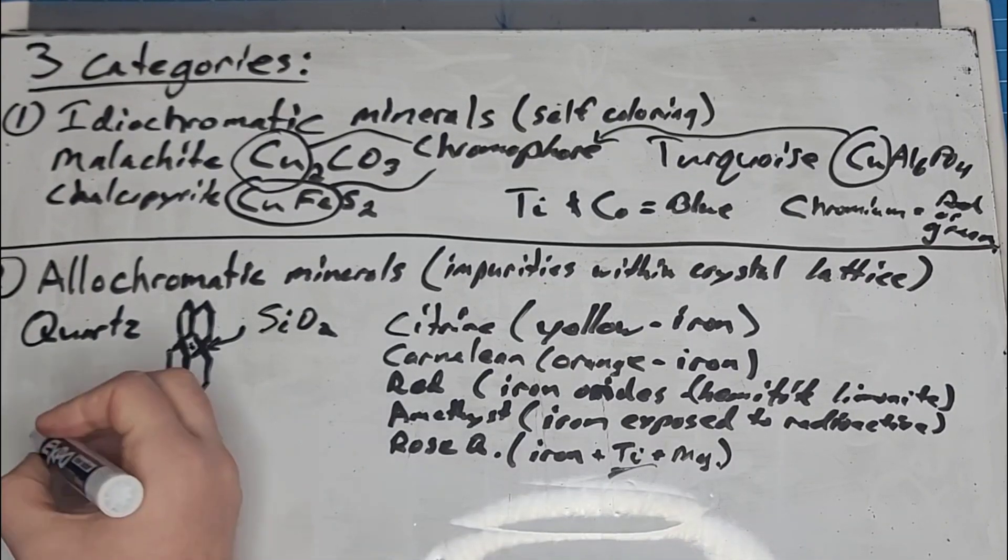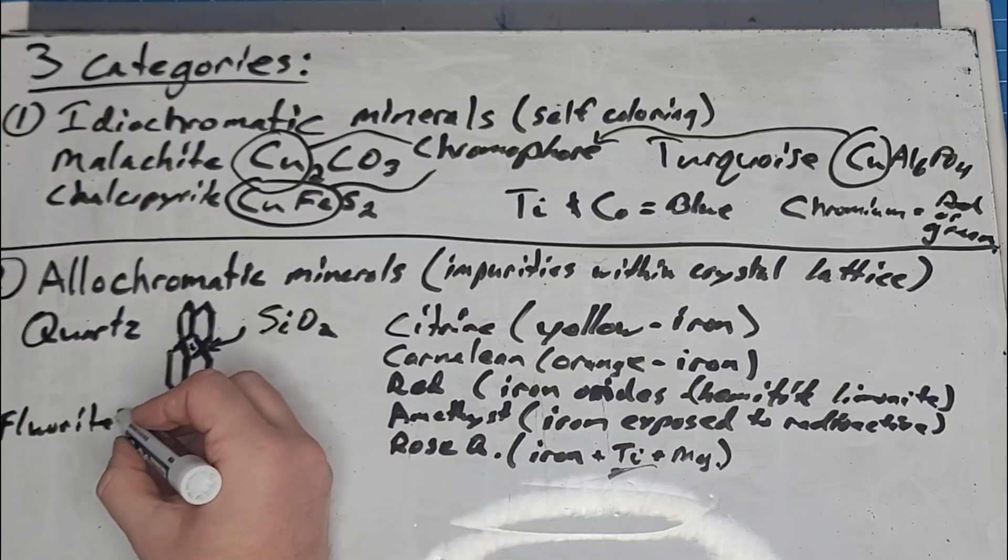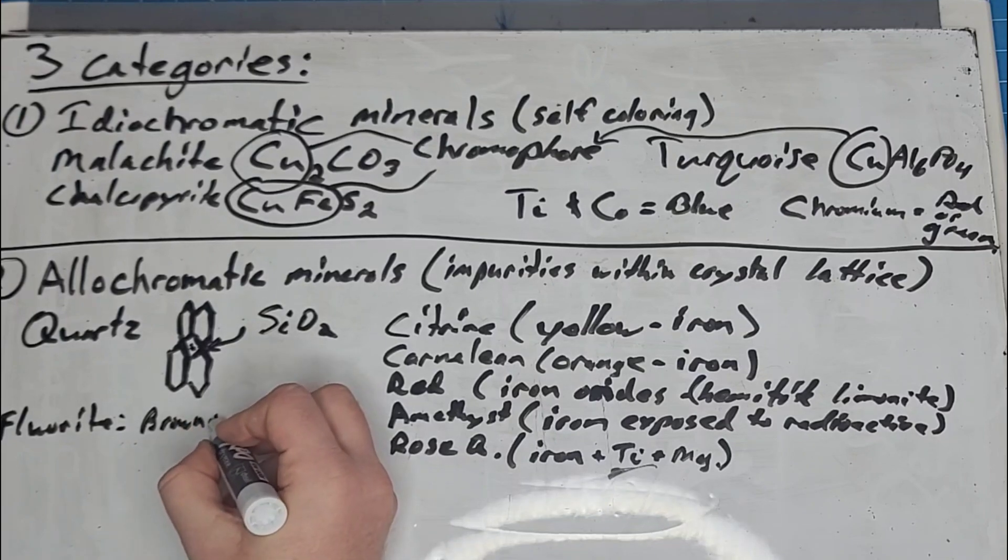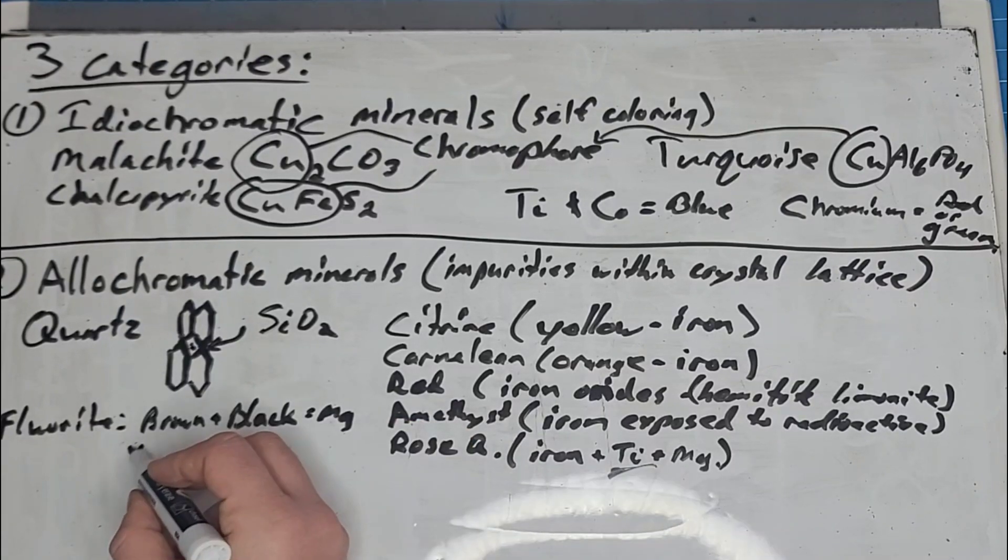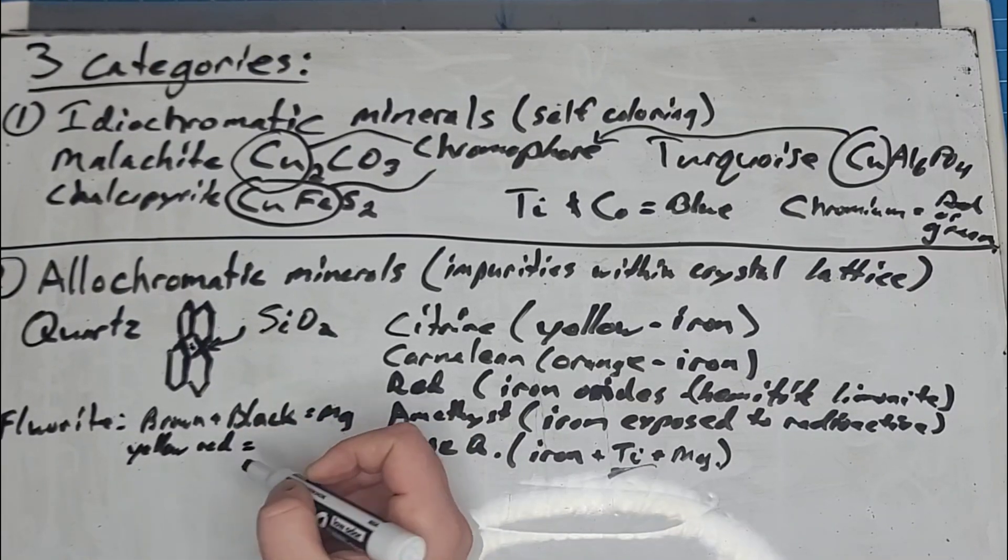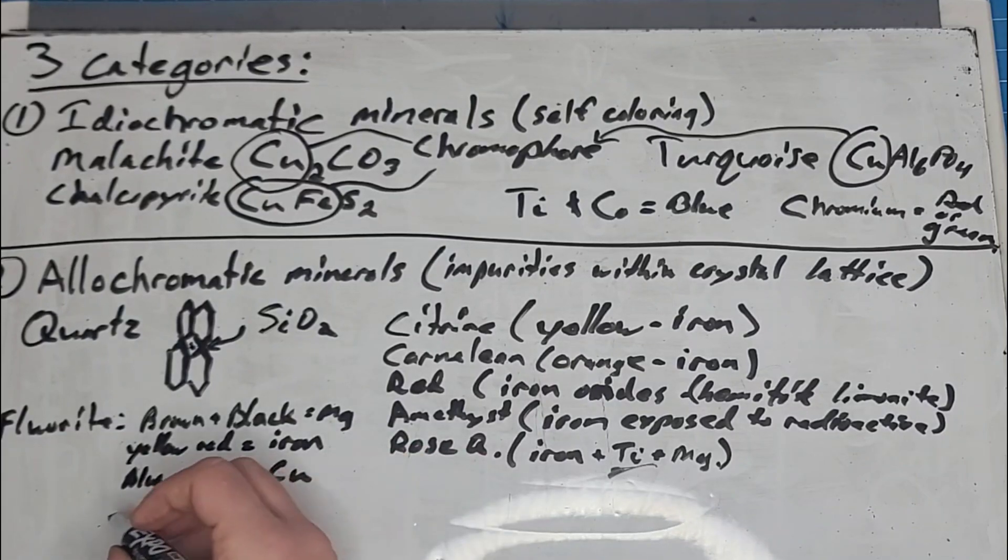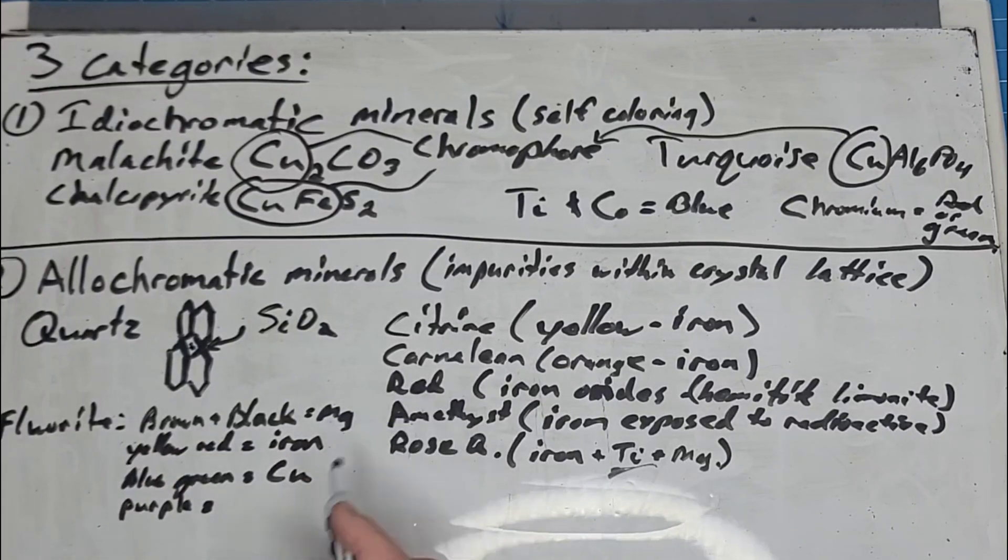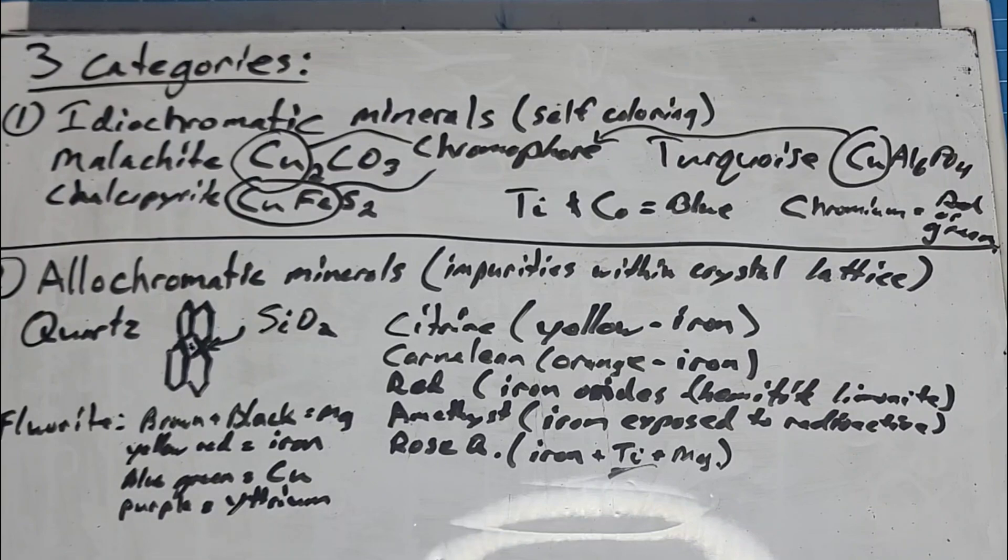Another allochromatic mineral, fluorite. Fluorite and quartz are both clear with no impurities. They're clear translucent minerals. When you add impurities, you get color. So for fluorite, brown and black, which is rare, but that's caused by manganese. Yellow, orange, and red, that's caused by, you guessed it, iron. Blue, green. Copper. Purple fluorite. Not the same as amethyst. It's actually caused by a mineral called yttrium. And let's not go into that detail. Just know that there's a transition metal there called yttrium. And that's what causes fluorite to be purple.